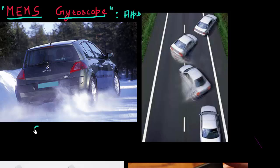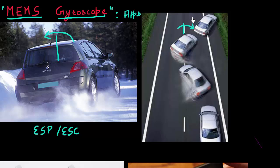Chances are, if you are driving a car today, it's equipped with an electronic stability program or electronic stability control, which prevents the car from rolling over or skidding, which might happen especially in snow or wet conditions. That rollover or skidding is detected by the MEMS-based gyroscope in the car, and then the electronics act upon that information to prevent it from happening. That's one application in the automotive space.